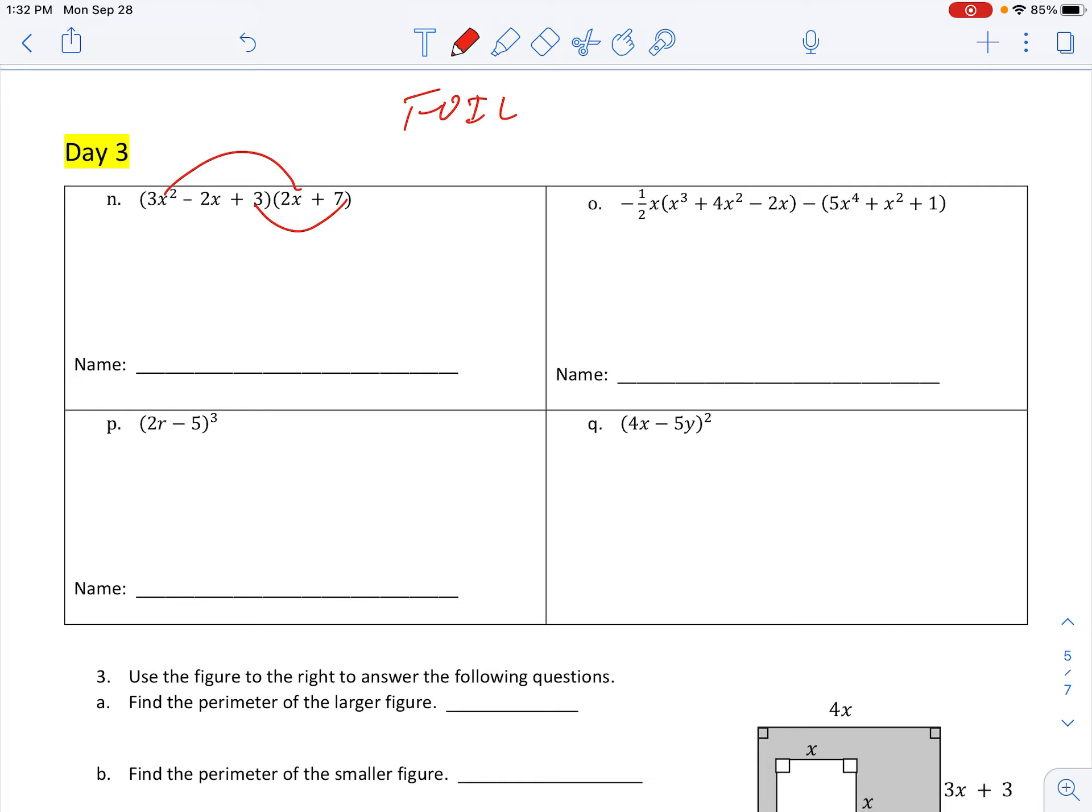Now, when we get to inner terms and last terms, inner, well, where is that going? Is that going here? Is that going here? I don't know. And then when I get to last terms, well, I took care of the last terms right here. So FOIL does not work for anything besides a binomial and binomial.